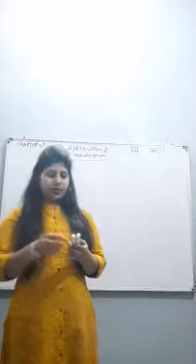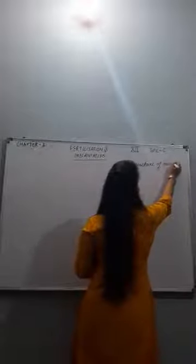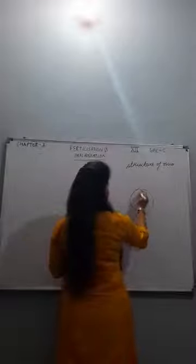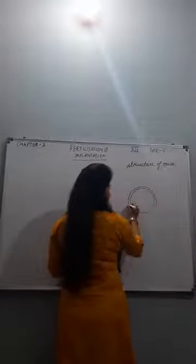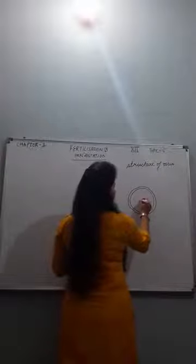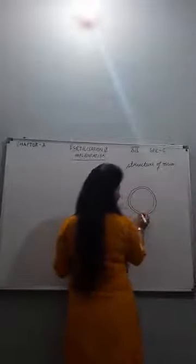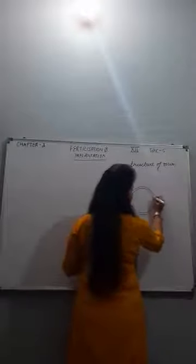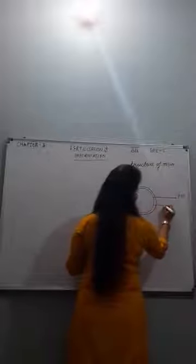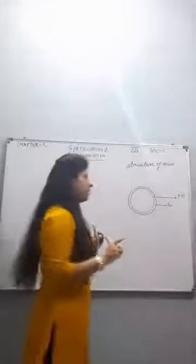For fertilization, you need to learn about the structure of the ovum. The ovum contains a plasma membrane, cytoplasm, and nucleus. Between the plasma membrane and the next layer is the perivitelline space — this is a new term for you.